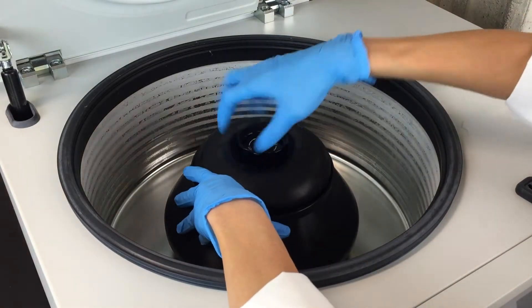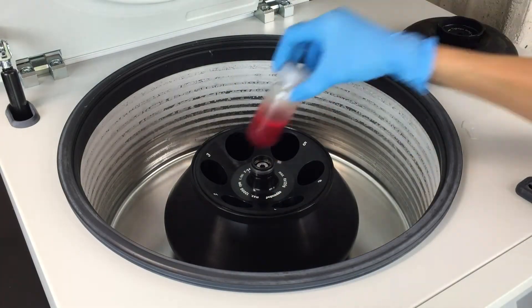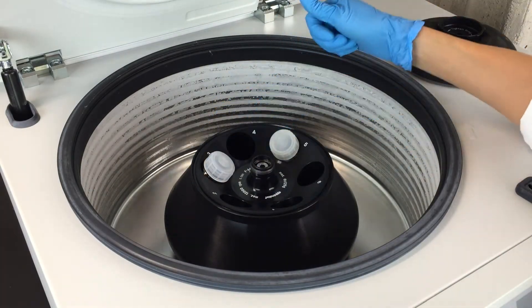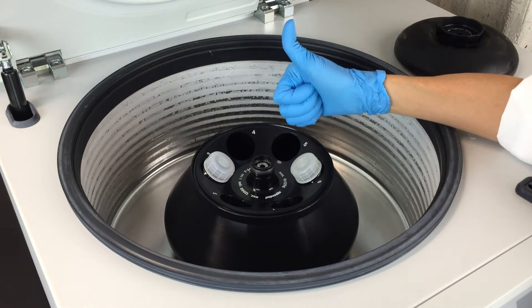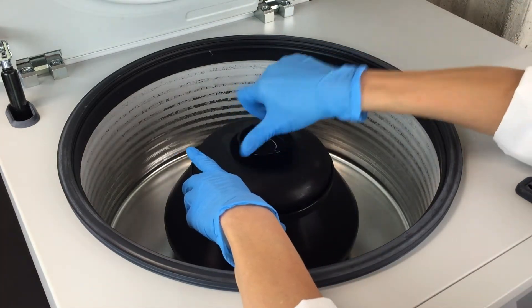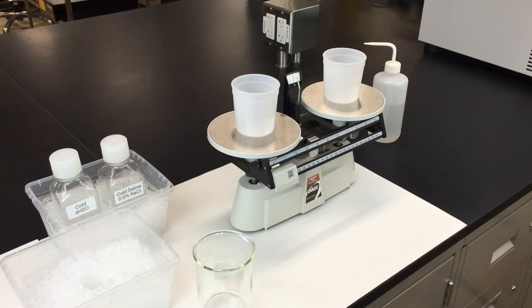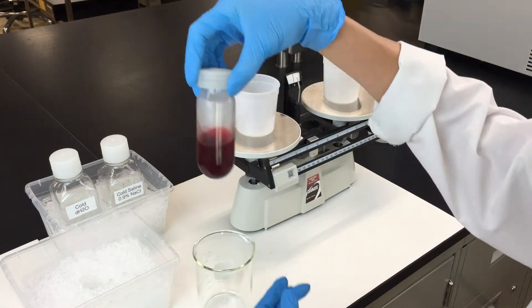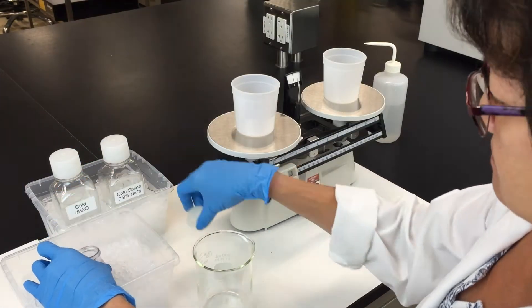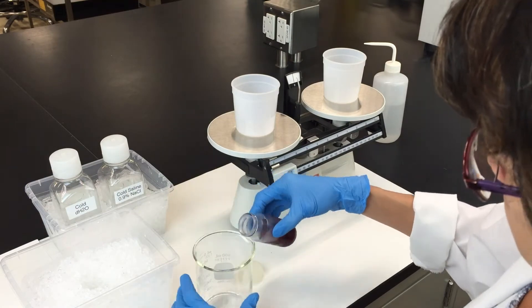Centrifuging isolates the red blood cells in a pellet at the bottom. Place the tubes opposite each other in the rotor to balance them. If you don't, it could damage the centrifuge. After the first spin, you want to pour off the liquid layer and keep the pellet.